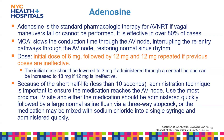Key dosing considerations: if a patient has a central line, lower the initial dose to 3 mg then 6 mg and 6 mg. If patients are on carbamazepine or dipyridamole, also lower to 3 then 6 and 6, as these potentiate adenosine's toxic effects. Conversely, if a patient recently had a lot of caffeine — since caffeine competitively antagonizes adenosine — give a higher dose, starting with 12 mg and going to 18 mg and 18 mg.